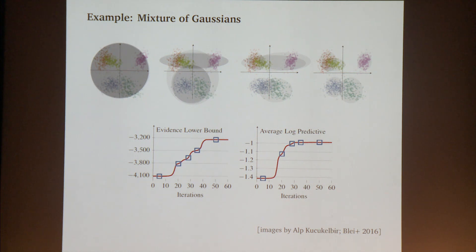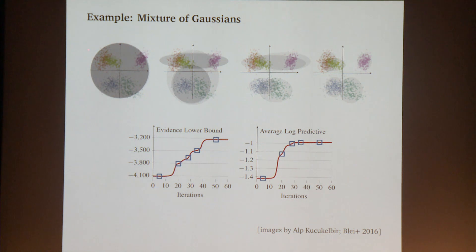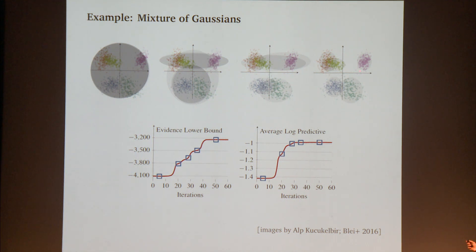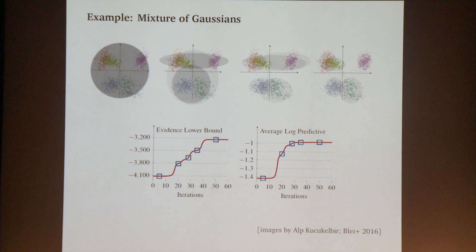Here's an example. This picture shows using variational inference to fit a mixture of Gaussians, illustrating the induced posterior predictive from the variational approximation. When the algorithm starts, we have a pretty bad posterior predictive. Here's our data — data that comes from a mixture model where we don't get to observe which mixture component each data point belongs to. As variational inference proceeds, the posterior predictive gets better and better at capturing the distribution of the data. The evidence lower bound — essentially the negative KL divergence between Q and P of Z given X up to a constant — increases as we get closer and closer to the exact posterior.